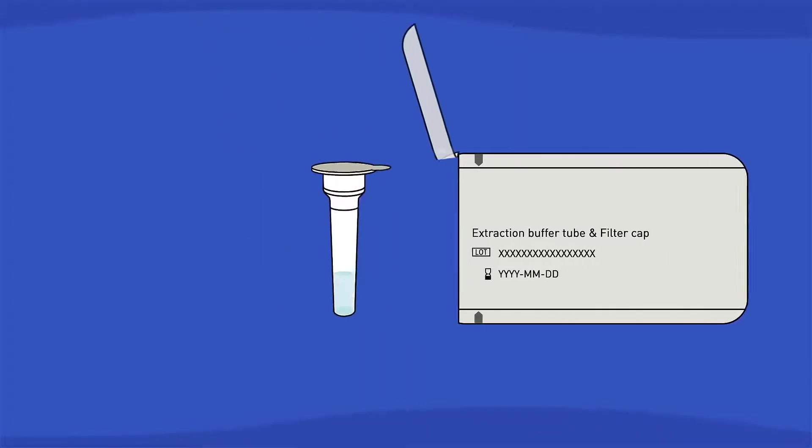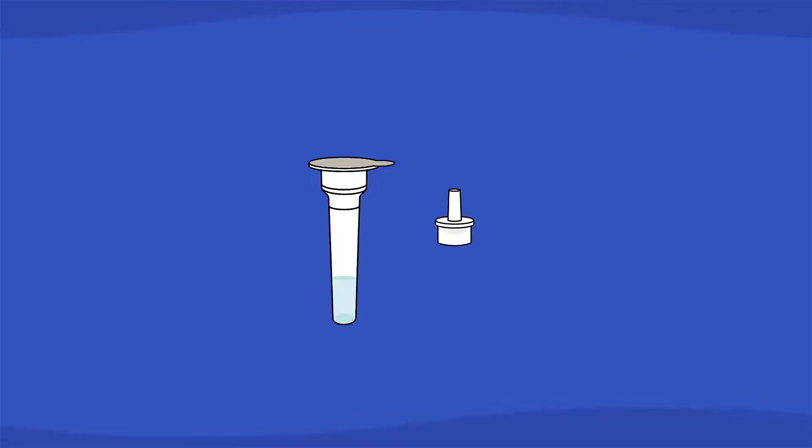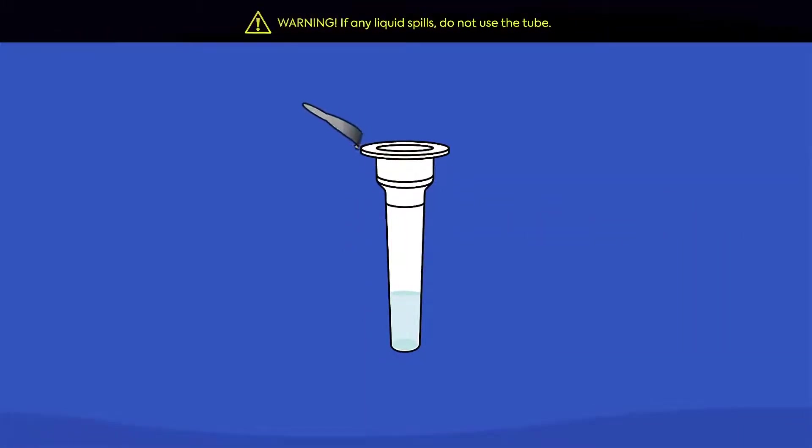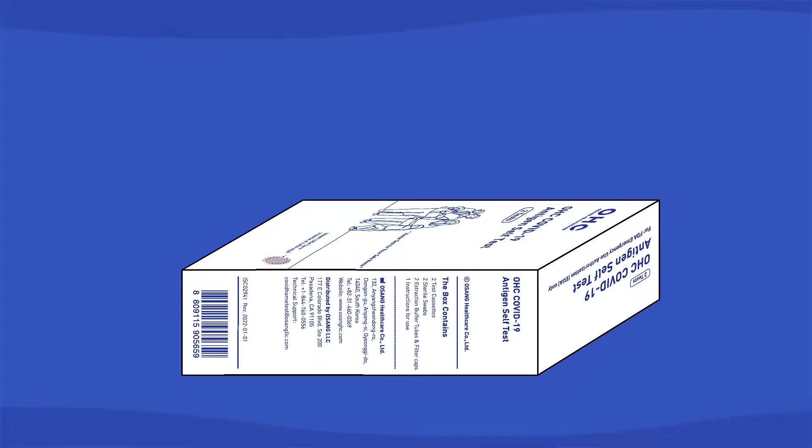Then, open the pouch that contains the extraction buffer tube and filter cap. Gently peel off the top seal without spilling the liquid inside the tube. Punch a hole in the box to keep the buffer tube upright, and place it in the designated hole on the box.